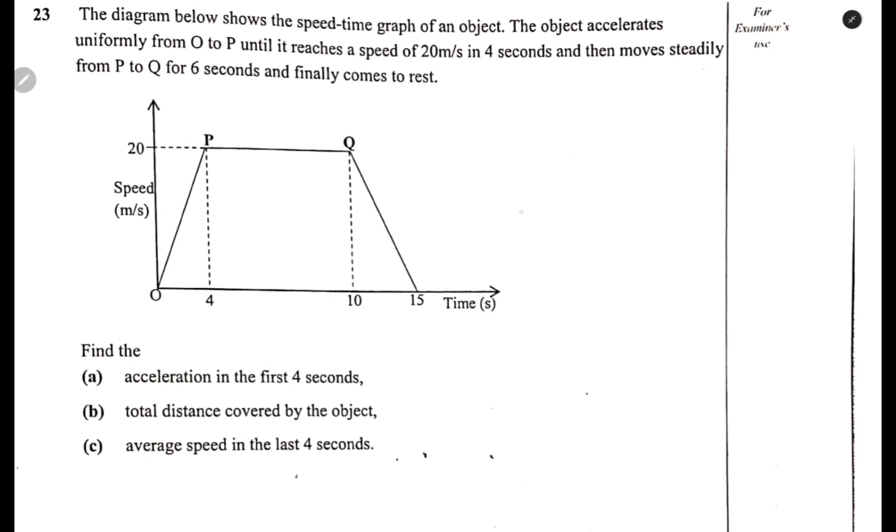The diagram below shows the speed-time graph of an object. The object accelerates uniformly from O to P until it reaches a speed of 20 meters per second in 4 seconds, then moves steadily from P to Q for 6 seconds, and finally comes to rest.